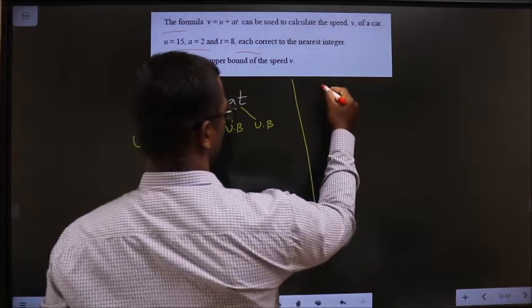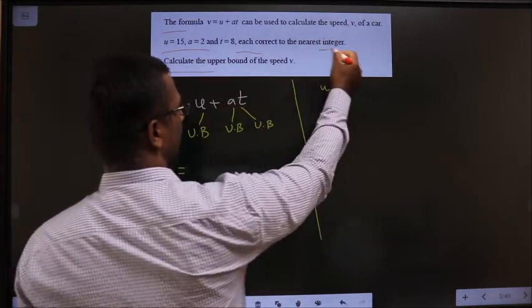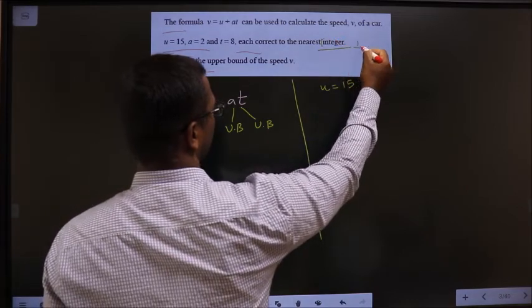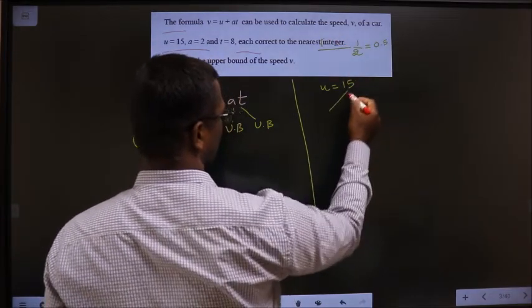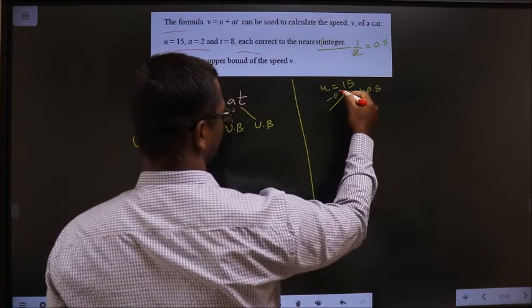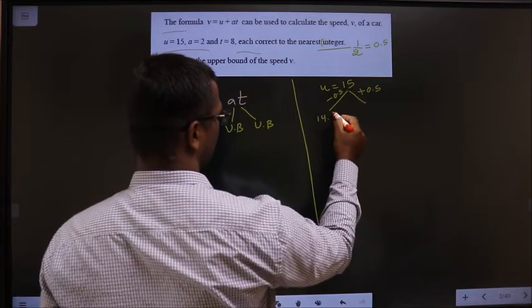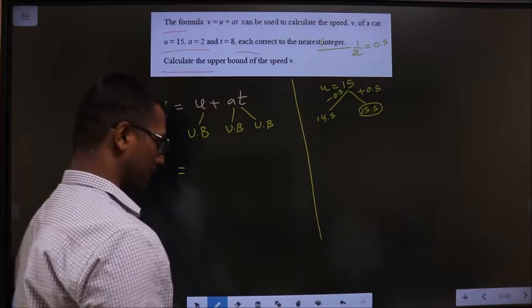U is 15. This is corrected to nearest integer. If I take half of that, 0.5. So add and subtract 0.5. I get 14.5 and 15.5. So upper bound is 15.5.